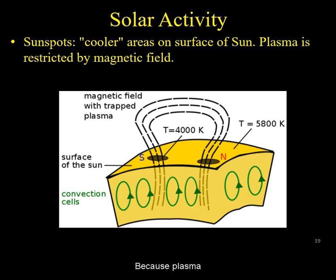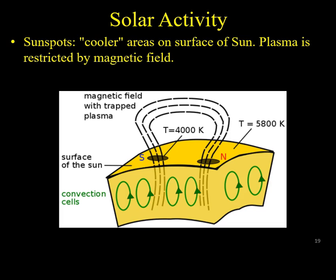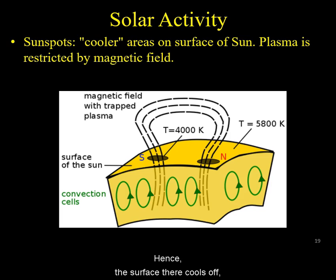Because plasma cannot cross magnetic field lines, this will impede the convection of hot plasma from below that would replenish the heat in the sunspot. Hence, the surface there cools off and we observe the darker area.